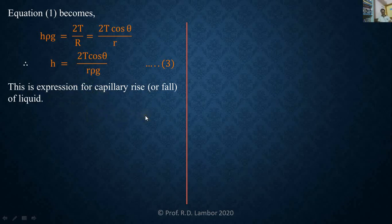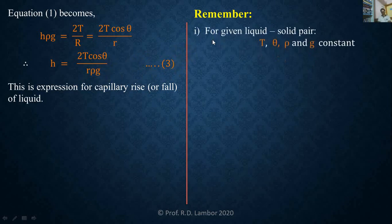From this formula we can draw a conclusion about the relation between capillary rise and the radius of the capillary tube. For a given liquid and solid pair, surface tension T, angle of contact theta, density rho, and acceleration due to gravity g are all constants. So H is inversely proportional to r.